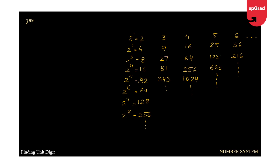Looking at the unit digits of powers of 2: 2, 4, 8, 6, then again 2, 4, 8, 6 — the unit digit is repeating in a cyclic fashion. For 3 the unit digits are: 3, 9, 7, 1, and then 3 again — definitely the next digits would be 9, 7, 1. So we are getting the same kind of repetition. For 4 it is 4, 6, 4, 6 — also getting repeated, but the cycle length is different.